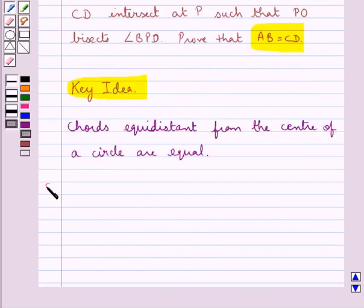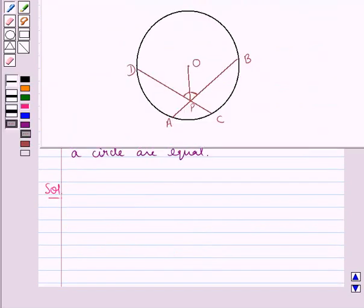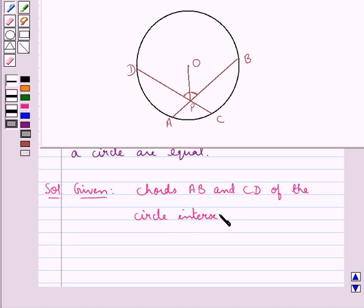Now let's move on to the solution. This is the figure given to us. In this, we have the chords AB and CD of the circle intersect at the point P.